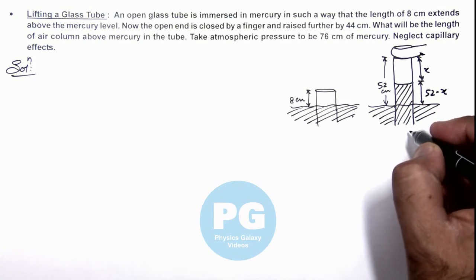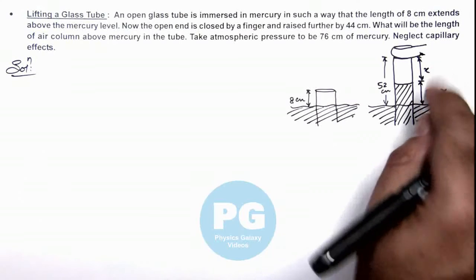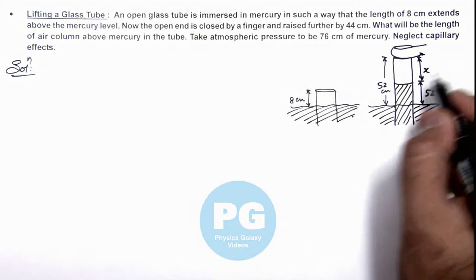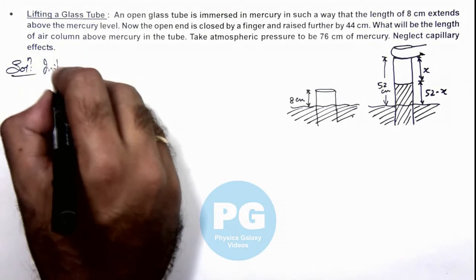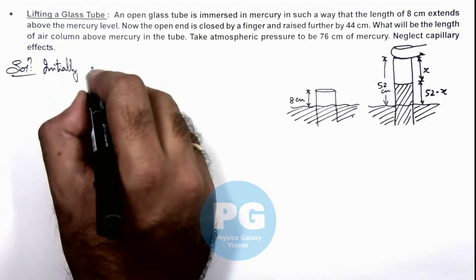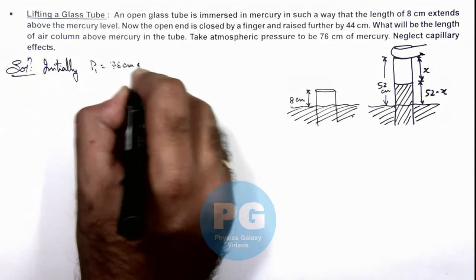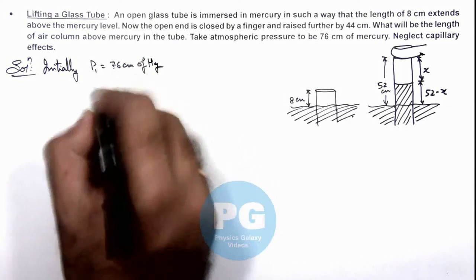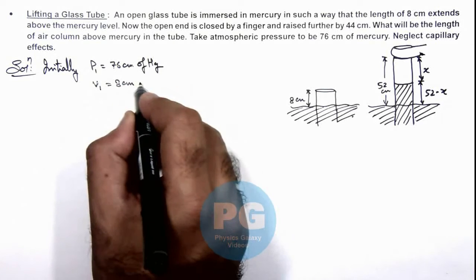Now we are required to find what will be the length of air column above mercury, so we'll be calculating the value of x. Initially, pressure P1 is 76 centimeters of mercury, and initial volume V1 is 8 centimeters of tube.